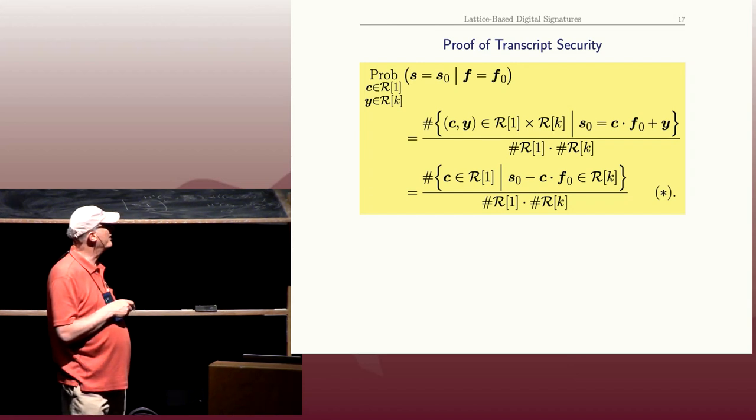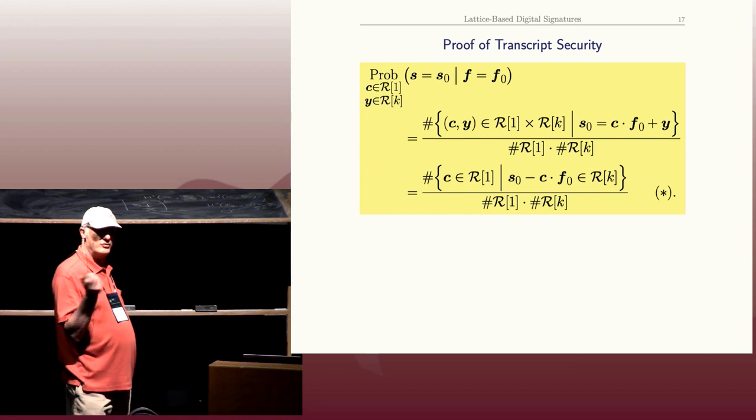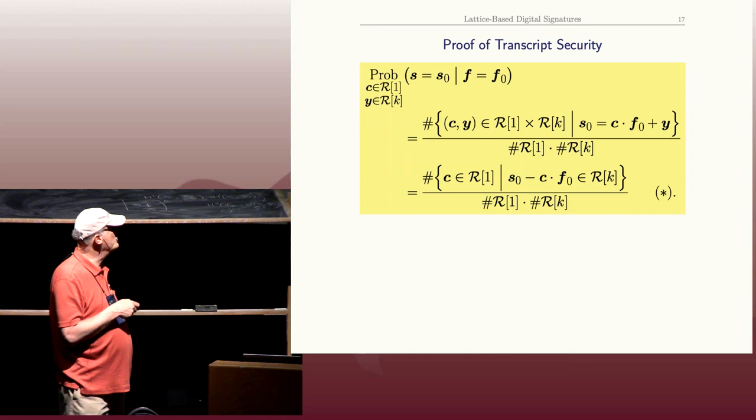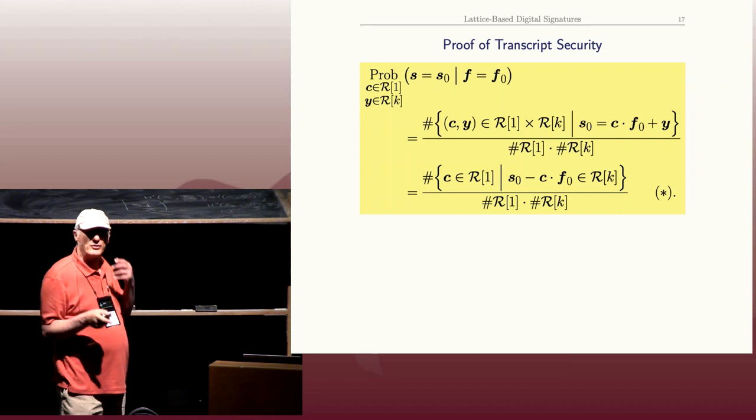How many C's are there with very small coefficients such that S naught minus C times F naught has coefficients that aren't too big, that are at most K?